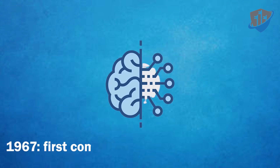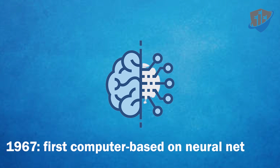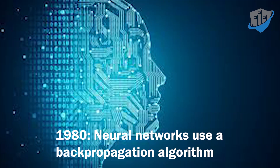1967: Frank Rosenblatt builds the Mark I Perceptron, the first computer based on a neural network that learned through trial and error. By 1980, neural networks using a backpropagation algorithm to train themselves become widely used in AI applications.